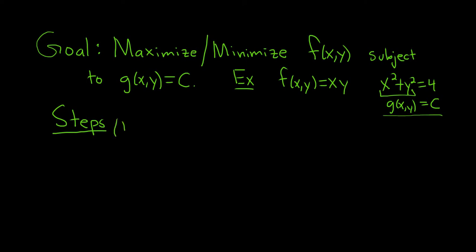Step one in the process of Lagrange multipliers is to solve the following equations. We have the first equation: the gradient of f at x, y is equal to lambda, the Greek letter lambda, times the gradient of g of x, y.